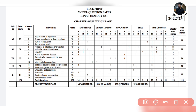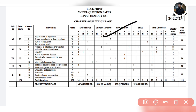For 2-mark questions, we can take chapters like Reproduction in Organisms or Sexual Reproduction for knowledge-based questions, and Evolution of Molecules for knowledge base. For understanding-level 2-mark questions, we take Reproduction in Organisms and Principles of Inheritance. For application-level 2-mark questions and skills, that is again Principles of Inheritance. Now let's move to 3-mark questions.